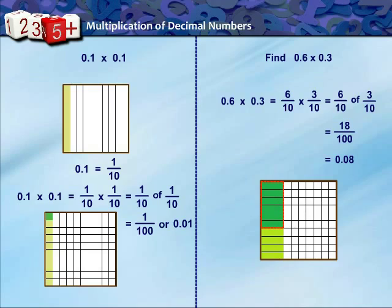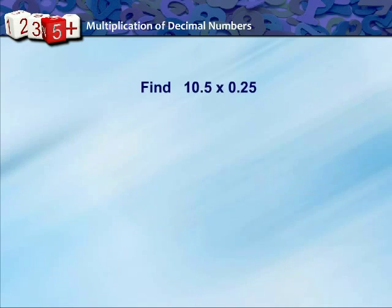Now, from both these examples we notice that for multiplying any two decimal numbers, first we have to multiply them as whole numbers ignoring decimal point. Then count the total number of digits to the right of the decimal points in the numbers being multiplied. Then put a decimal point by counting that many places from right to left.